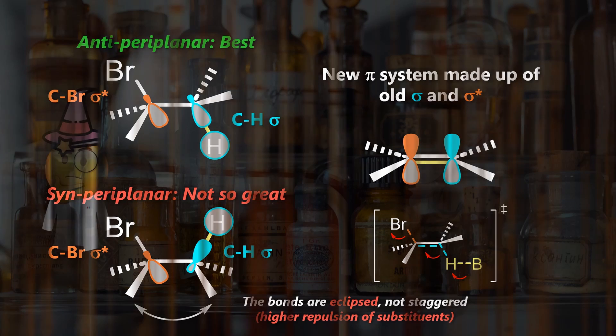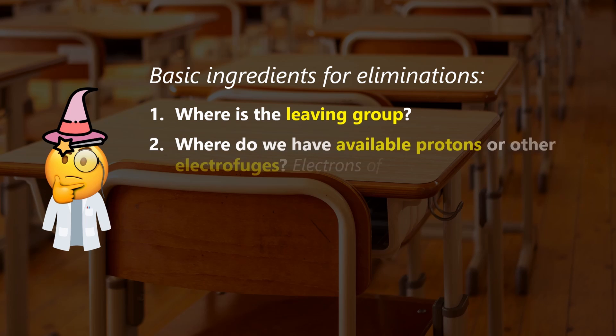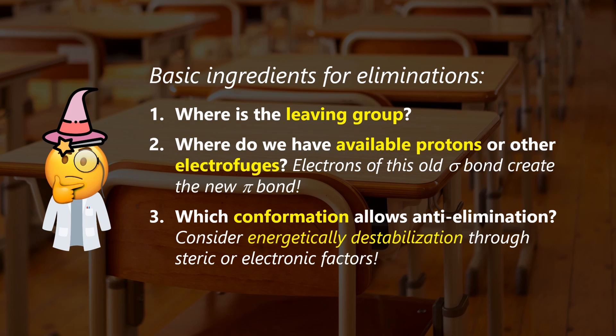For every elimination, we always need to first find the leaving group, second the electrophage—as we will see it's not always a proton—and third consider the reactive conformations. Our examples will highlight that energetically preferred and reactive conformations can often be different.